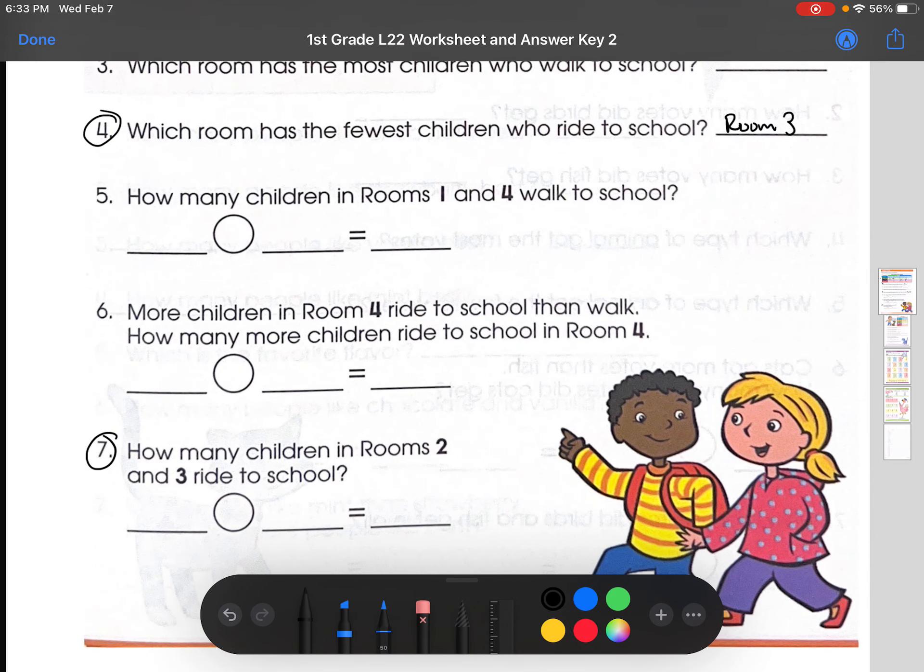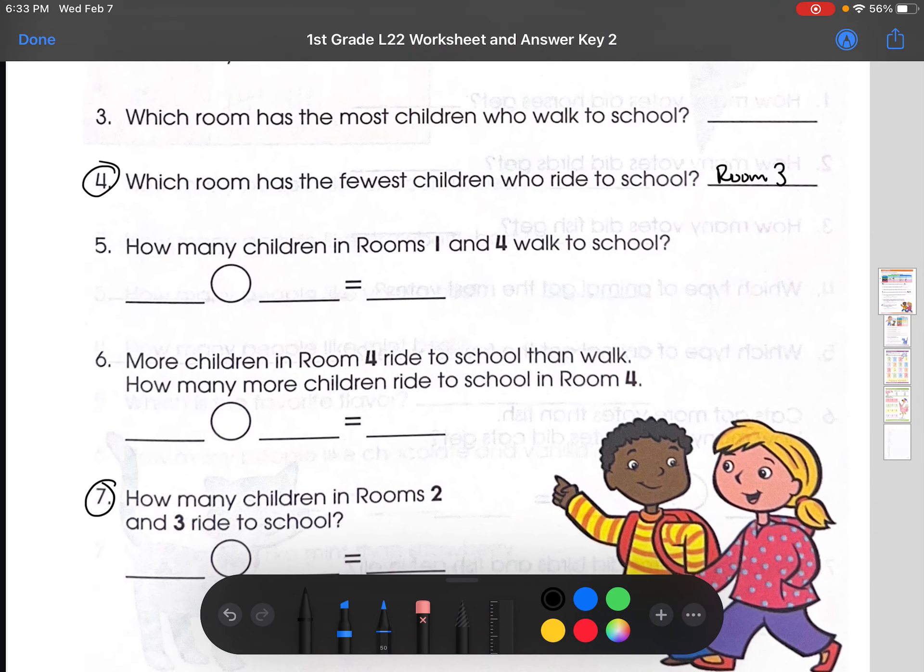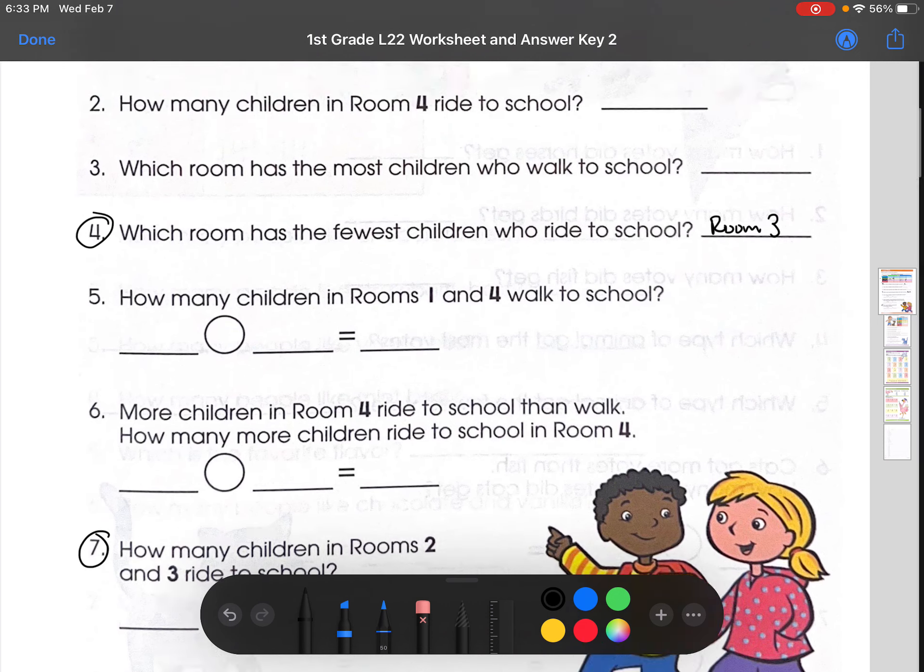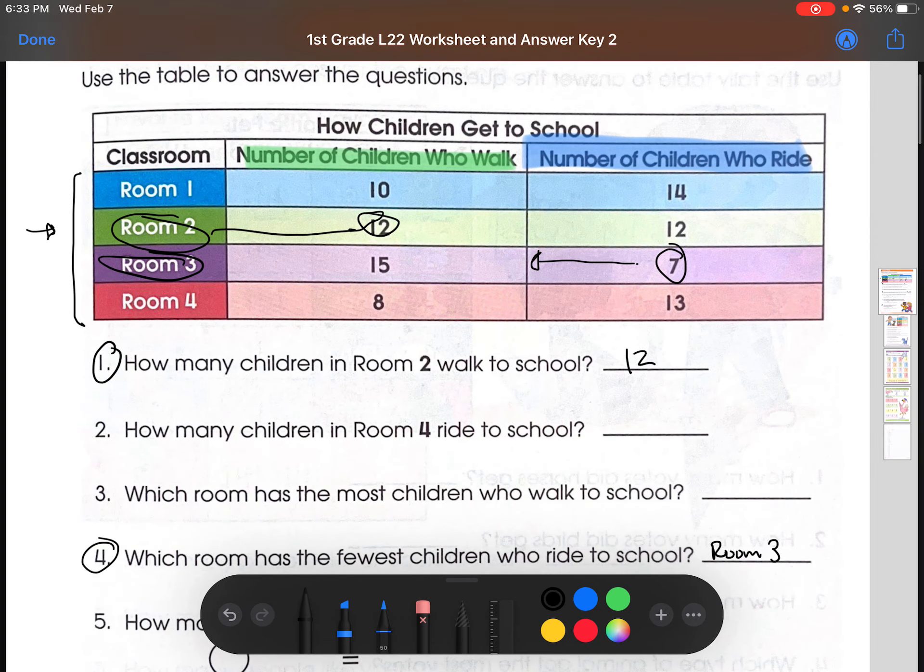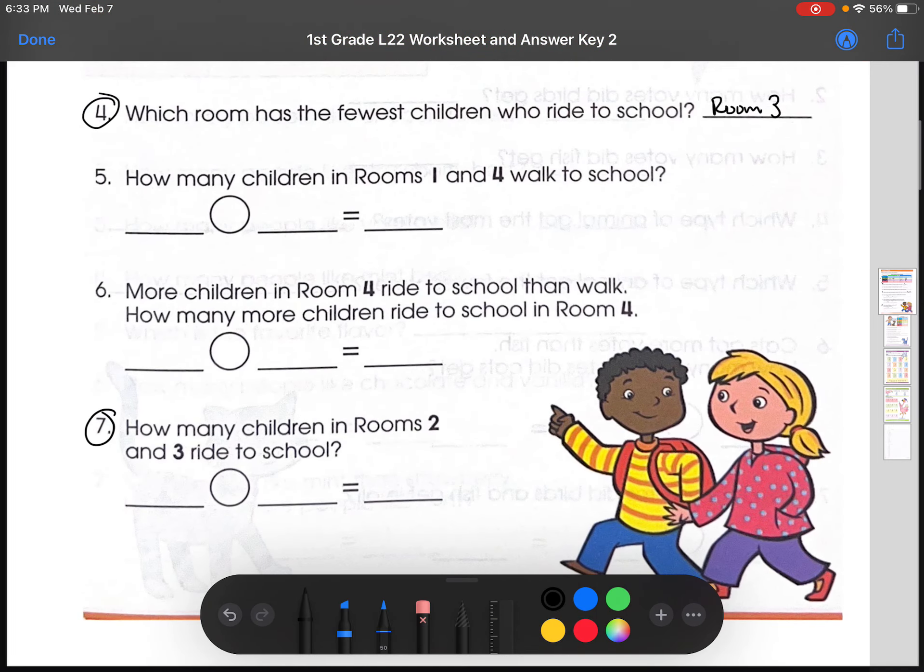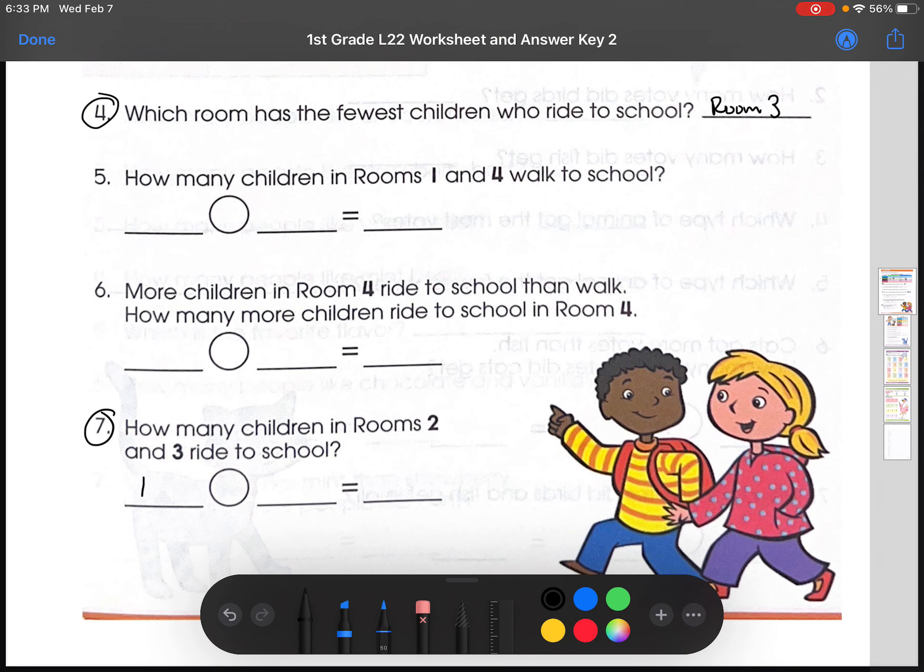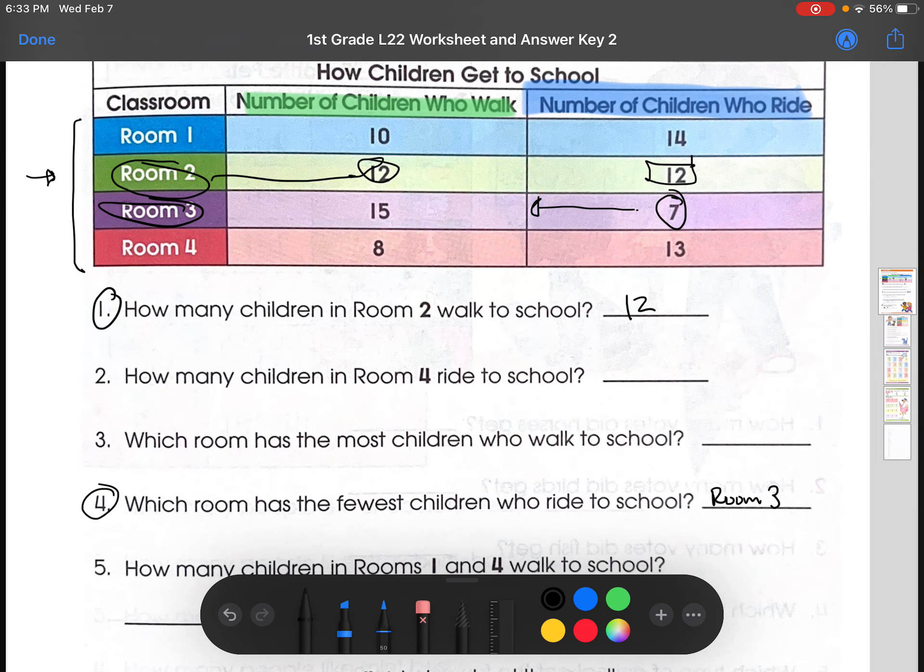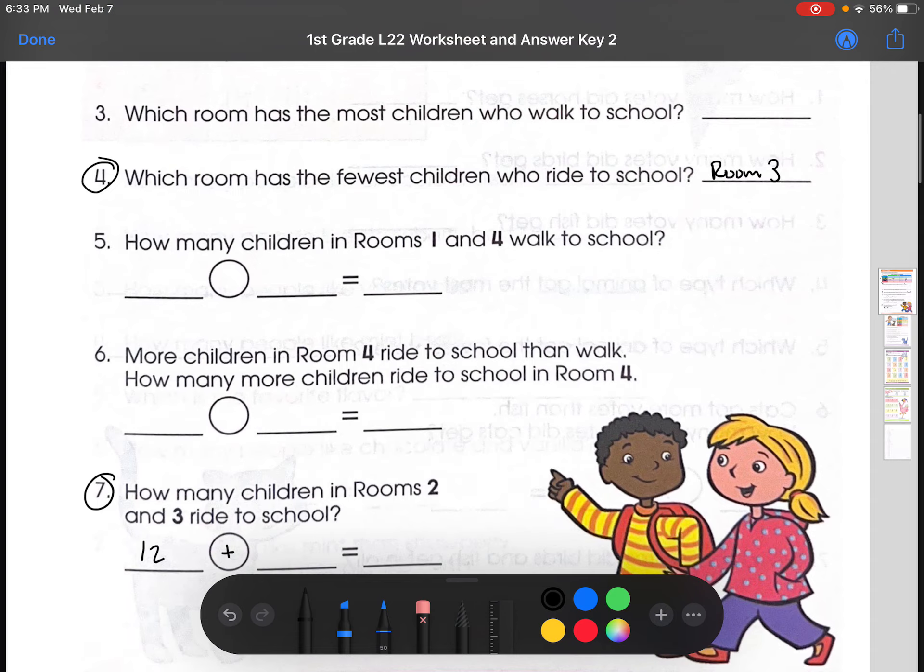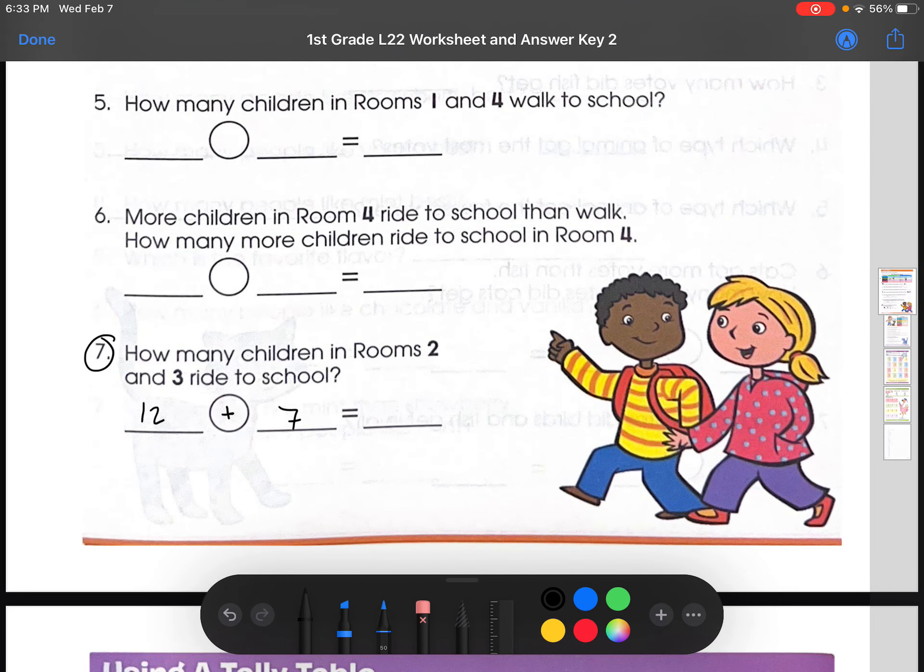So let's just also do number 7. How many children in rooms 2 and 3 ride to school? So room 2, we can look at the children who ride and that is 12. So we'll put 12 here. And because we're looking for the total, it will be adding the operation. And then we'll go up to room 3. We establish that there are 7 kids who ride to school there. So we'll do 12 plus 7. And then use the number line method if you can't do it in your head. But I'm going to do it in my head and the answer would be 19.